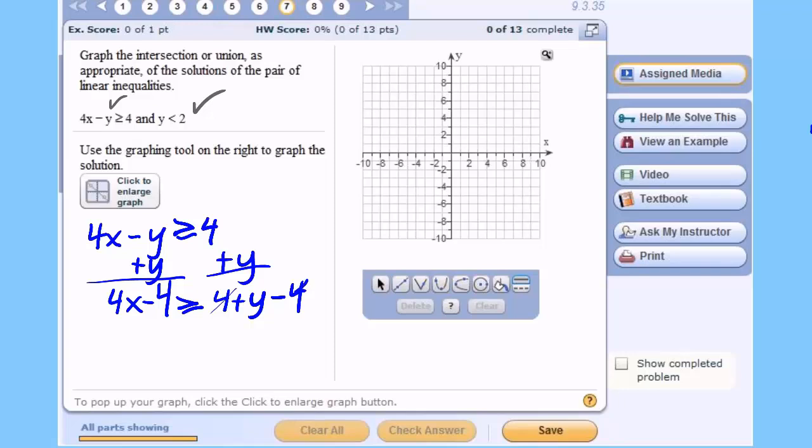Over here, 4 - 4 is 0, so I will have 4x - 4 ≥ y. Now I want you to stop and think for a minute: if 4x - 4 ≥ y, then y ≤ 4x - 4. So I'm going to turn this around the other way: y ≤ 4x - 4. Now this inequality is in slope-intercept form and I'm going to be able to put this in the TI graphing calculator. Watch what we do.